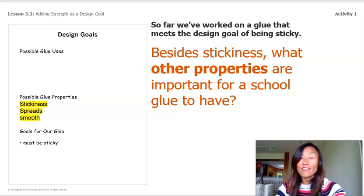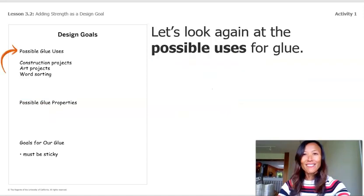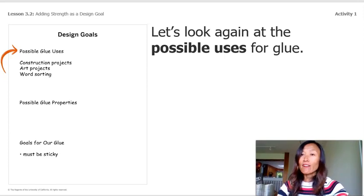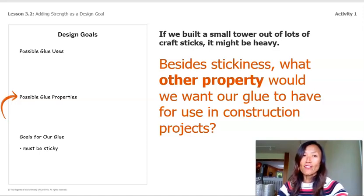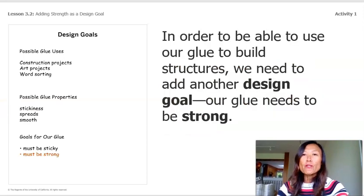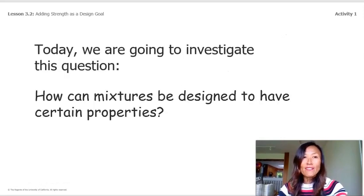We talked about how glue needs to spread and be smooth. Looking at possible uses — construction projects, art projects, and word sorting — if we built a small tower out of craft sticks it might be heavy. So besides stickiness, we would also want our glue to be strong so the tower wouldn't fall apart. That gives us another design goal: our glue needs to be strong.